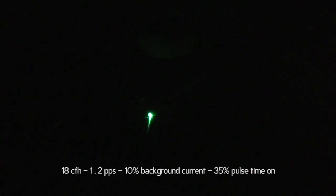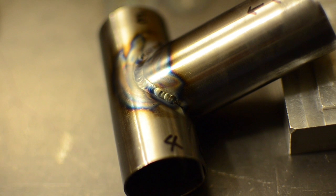So for this one I'm running 18 CFH, 1.2 pulses per second, 10% background current. And I turned the pulse time on down to 35%. And so when I turned it down to 35% it didn't give the puddle enough time to form. I could have run the puddle a little hotter but I didn't and I got a lumpy weld.